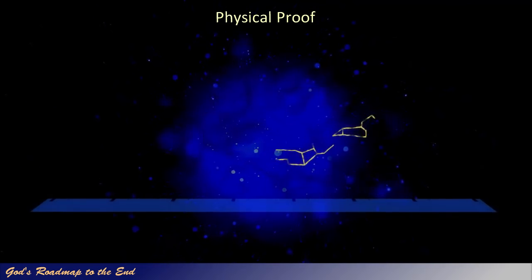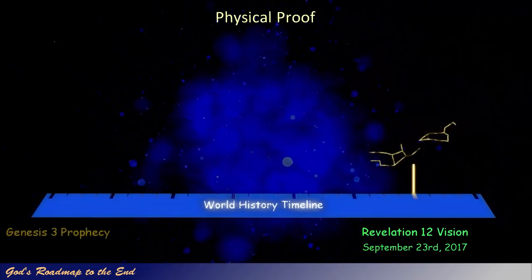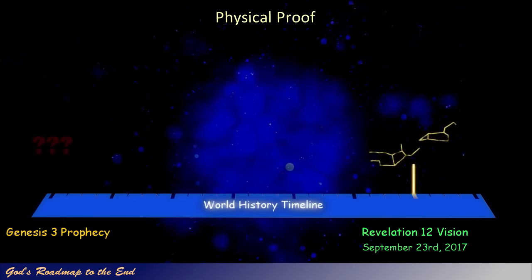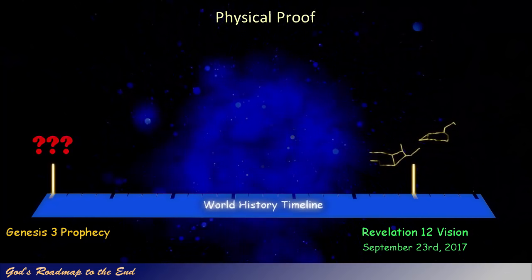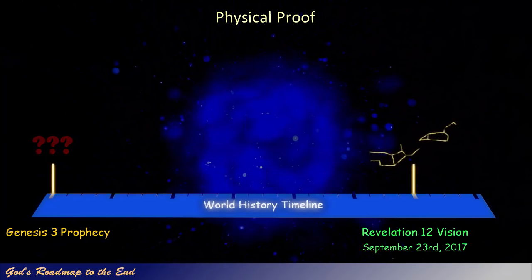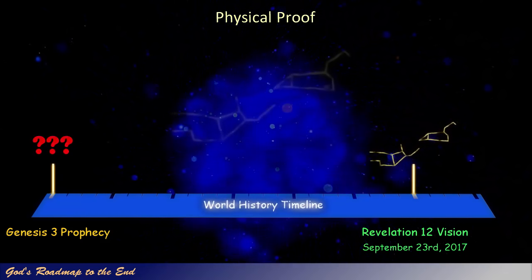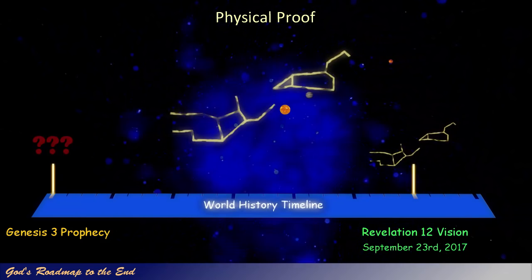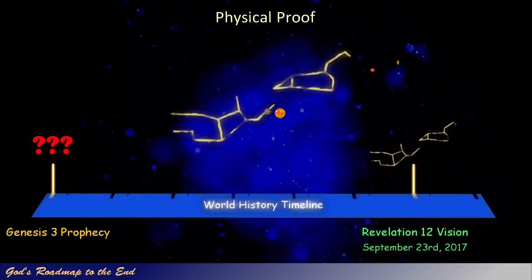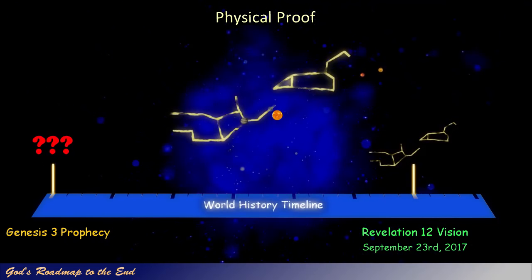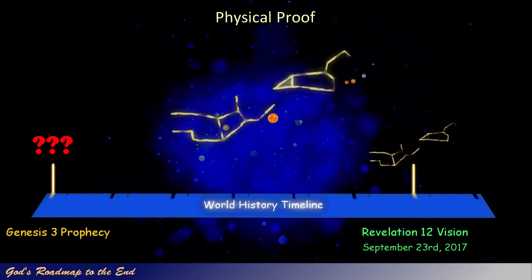After seeing how the vision given to John in Revelation 12 is marked with a physical celestial representation, and how it is linked to the prophecy given in Genesis 3 verse 16, I wondered if God would also mark the prophecy given to man in the Garden of Eden with a similar celestial marker. This would confirm and provide physical proof that we are indeed looking at the correct prophecy and vision that Daniel was told to seal up. The celestial representation and progression of stars and planets associated with the Revelation 12 sign are very complex and unique, requiring a number of events in the heavens to succeed each other perfectly.